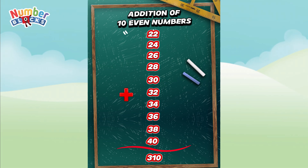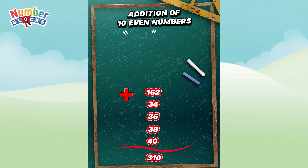Next, let's try another one. 22 plus 24 is equal to 46. 46 plus 26 is equal to 72. 72 plus 28 is equal to 100. 100 plus 30 is equal to 130. 130 plus 32 is equal to 162. 162 plus 34 is equal to 196. 196 plus 36 is equal to 232. 232 plus 38 is equal to 270. 270 plus 40 is equal to 310.